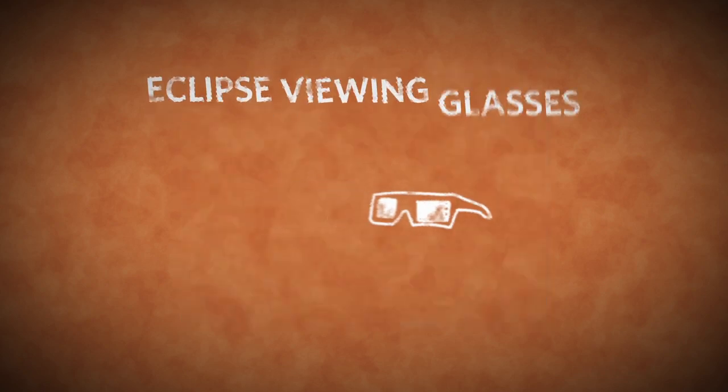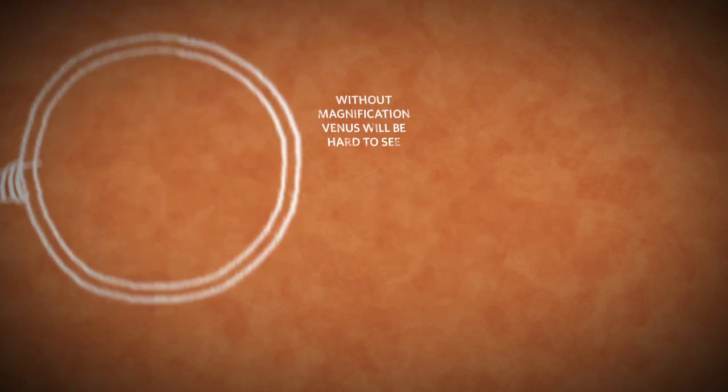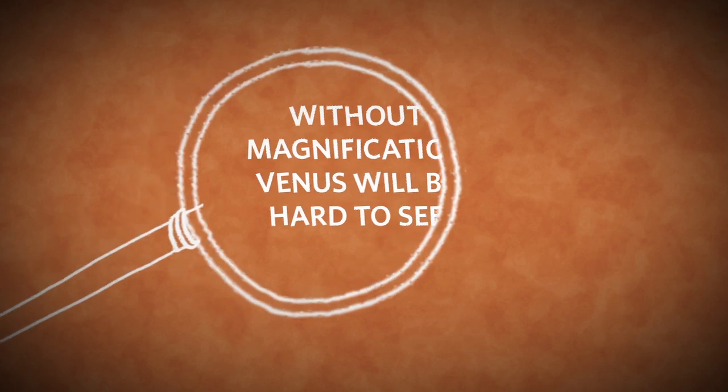A pair of eclipse viewing glasses will allow you to observe the transit safely without any eye damage. But without magnification, Venus will be hard to see.